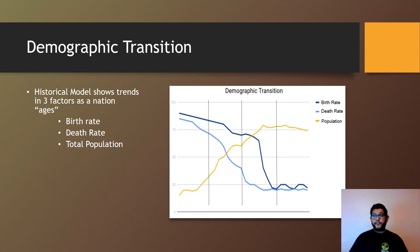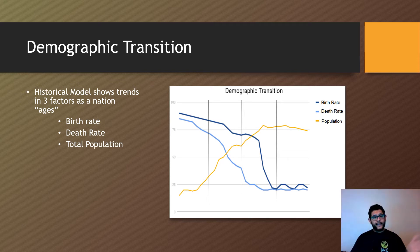Demographic transition is usually a graph that looks similar to this. It's a historical model that shows what phases or stages a country or nation will go through as it ages and progresses.